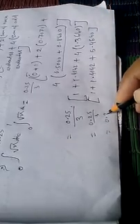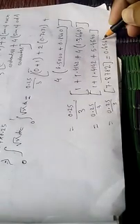So this becomes 0.25 by 3, and these terms 1 plus 1.4142 plus 4 times 1.3660 equals 5.4640. So they all sum to make 7.8782.